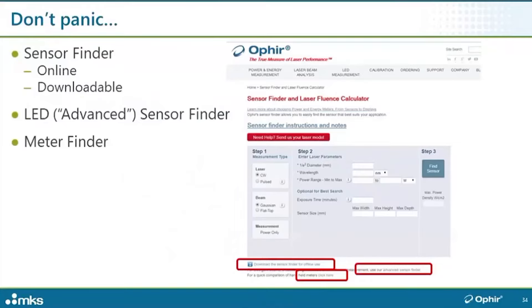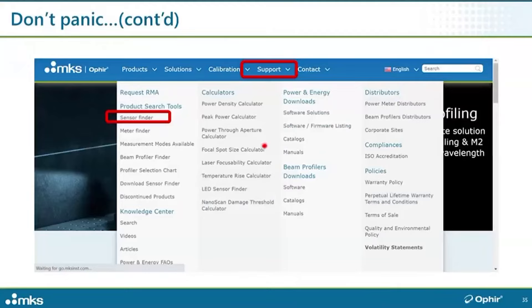So how do you choose a sensor? Don't panic. We have on our website a software tool that we call the sensor finder. It asks you to input the laser parameters that it needs to know in order to choose the right sensor. Then it'll give you a list of sensors that can do the job, including under your laser conditions how close each of those sensors would be to its damage threshold. If the first sensor on the list is at 90% of damage threshold, you don't want to choose that sensor. Usually we recommend to try and not go above 50% of the damage threshold.